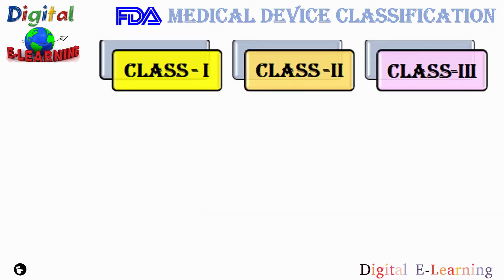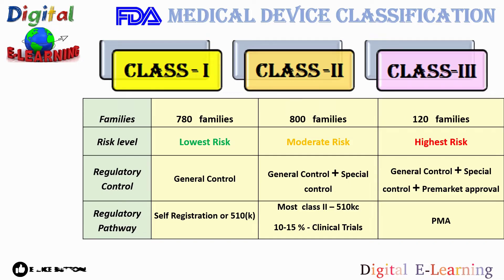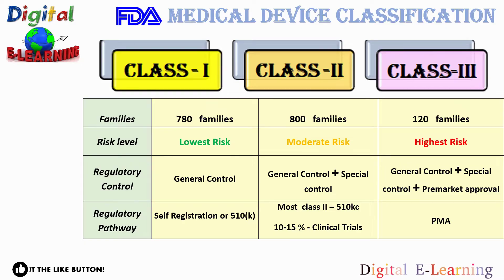Class 1 medical devices have the least amount of regulatory control. There are approximately 1700 types of medical devices overall, out of which 780 fall under Class 1 — approximately 47%. Out of these 780 families, 95 are exempted from the regulatory process. If your device falls into a generic category of Class 1 exempt devices, the pre-market notification application and FDA clearance are not required before marketing the device in the US. However, the manufacturer is required to register their establishment and list their generic product with the FDA. They only require general controls; no special controls are required. The regulatory pathway is only self-registration or the 510(k).